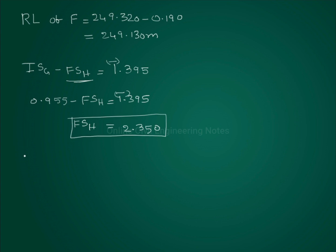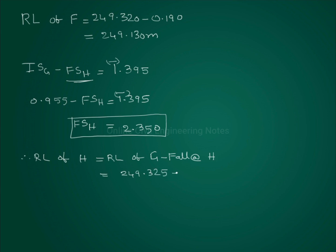So 0.955 minus fore sight at H gives fall 1.395, confirming fore sight at H. RL of G is equal to 249.325 minus 1.395, so RL of H is equal to 247.930 meters.